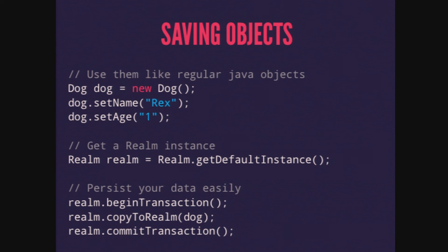If we want to take that dog object and save it to the database, it's pretty easy. We create a new instance of the dog object, then ask Realm for the default instance — basically opening the database connection. We begin a transaction, copy the dog object to Realm to save it, then commit. As soon as commit is hit, we have that dog in the database. I don't have to write any SQL — I just extended a class and told Realm to save it.